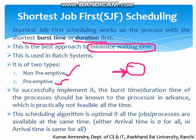In preemptive scheduling, one approach is Round Robin, where we fix a time quantum. After that fixed time quantum, the process executes in the CPU and then moves outside the CPU. The second aspect of preemptive scheduling is that it also works on the basis of priority. If a job is in the CPU and a higher priority job enters, the lower priority job gets removed from the CPU and the higher priority job gets the CPU. To successfully implement SJF, the burst time or duration of each process should be known in advance, which is practically not feasible at all times.